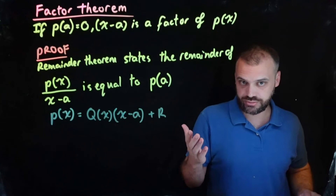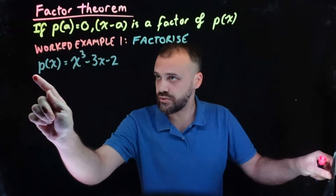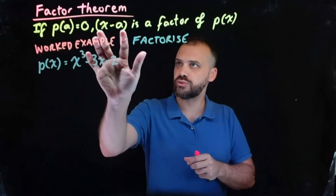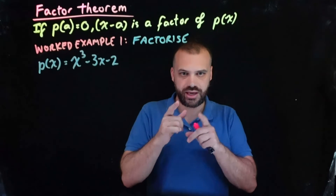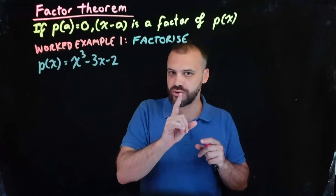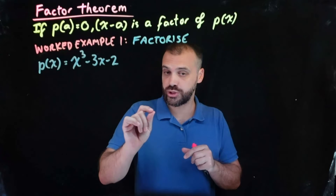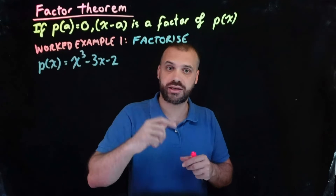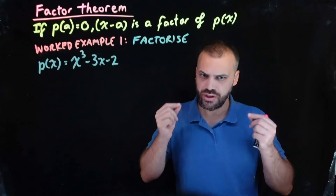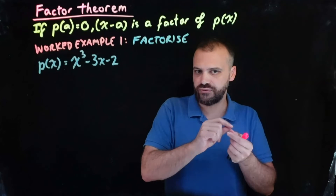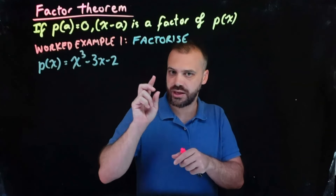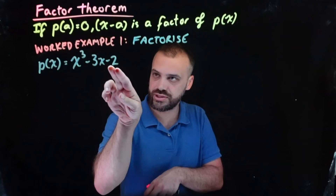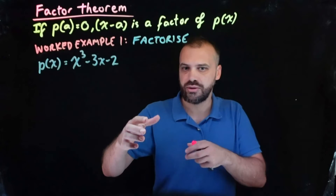Let's do some stuff with it. We're going to factorize this function right here. We need to find a factor x minus a. We know that if it's a factor, we should be able to sub in the value of a and get a remainder of 0. We should also know that a needs to be a factor of the constant term.